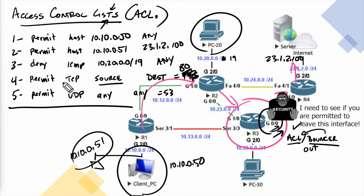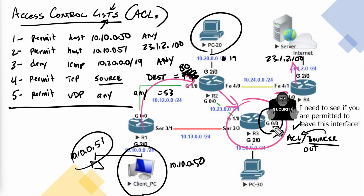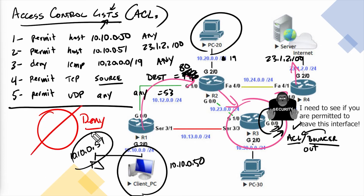What happens if this ACL is applied outbound on Gig 0/0 and traffic shows up that needs to be forwarded but doesn't match any existing entries? Think of a bouncer with a list of invited guests — if somebody who's not on the list shows up, the bouncer says 'sorry, you're not on the list.' That's exactly what happens. If traffic doesn't match any ACL entry, there is an implied action — deny — and that traffic is dropped. Any traffic going out Gig 0/0 that doesn't match a permit statement is automatically denied due to the implicit deny at the end.